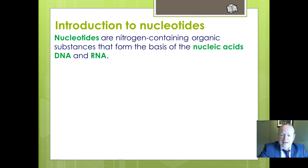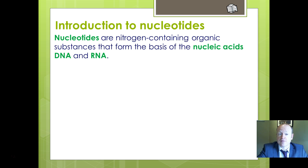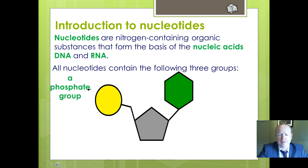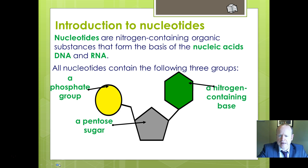What are nucleotides? Nucleotides are nitrogenous organic substances that form the base of nucleic acids. Nucleic acids are either DNA or RNA — the acids found in a nucleus — and they all contain three different things: a phosphate group, a pentose sugar, and a nitrogen or nitrogenous base.